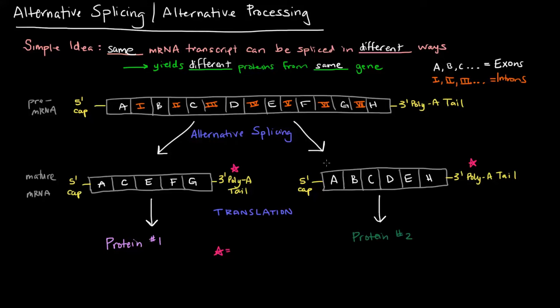In the second case we'll have A, B, C, D, E, and H in our mature mRNA. Then this mRNA can be translated, and so can this one, and they'll yield different proteins because they're different mRNAs. The whole idea is that these same initial transcripts can yield different mRNAs and different proteins.